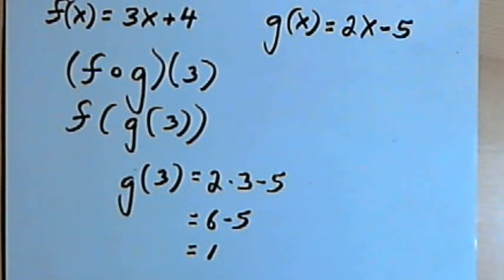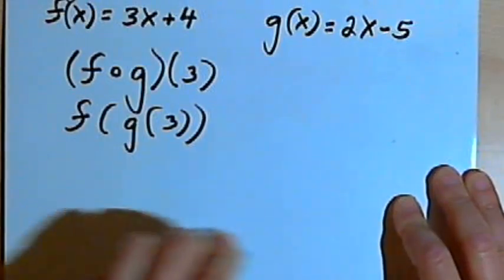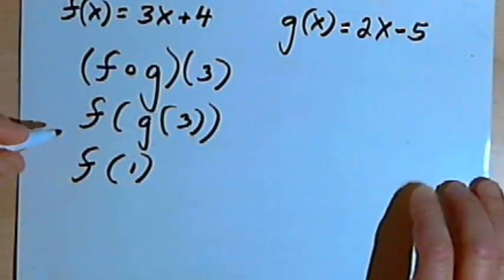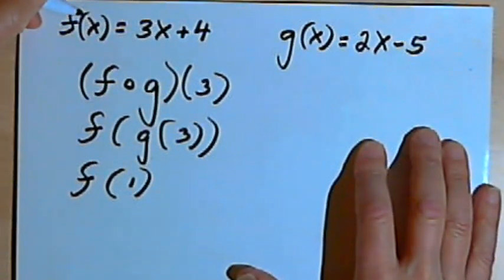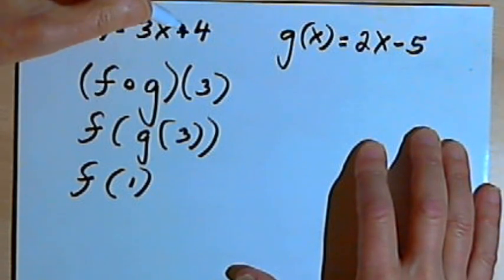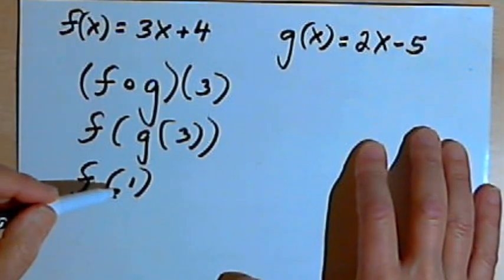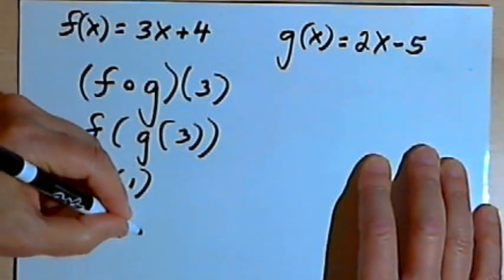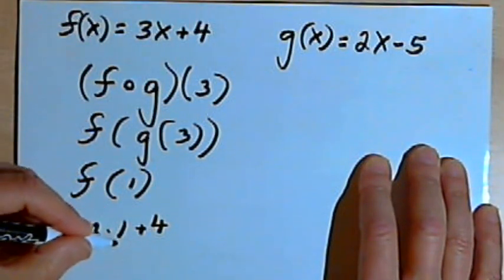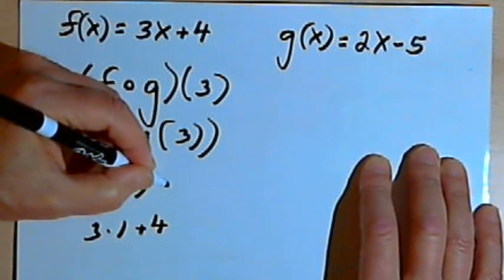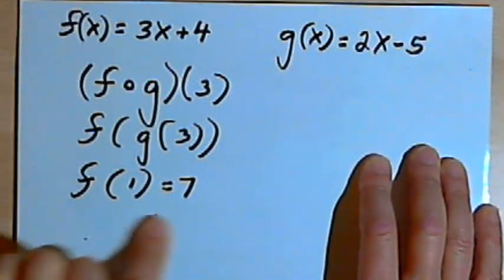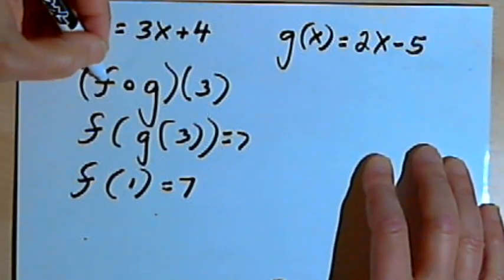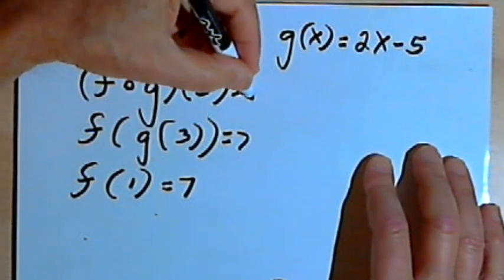Now I can rewrite that f of g of 3 by replacing the g of 3 with a 1. So it's going to be just f of 1. Well, I know what function f is. Function f is f of x equals 3x plus 4. So if I want f of 1, I'll put a 1 in wherever the x is. So that's going to mean it's 3 times 1 plus 4. 3 times 1 is 3 plus 4 is 7. So f of 1 is 7, which means f of g of 3 is 7, which means f compose g of 3 is 7.